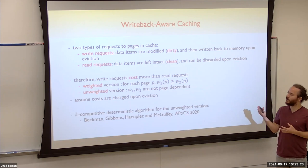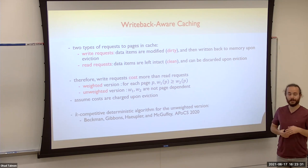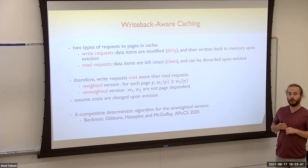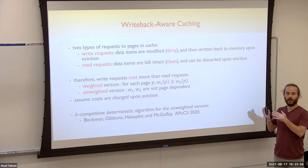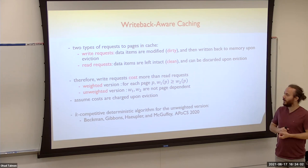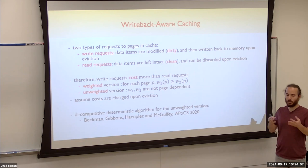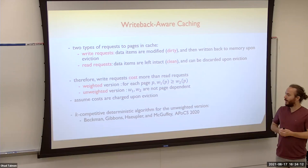In the weighted version, for each page p there is a cost w1, which is the cost of evicting a dirty copy of page p, and w2, which is the weight of evicting page p when it is clean. Obviously w1 is at least as much as w2. In the unweighted version, w1 and w2 are not page-dependent, meaning evicting a dirty copy costs w1 and a clean copy costs w2 regardless of which page it is. We assume all costs are charged upon evictions, when we actually know if the page is dirty or not.